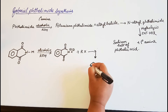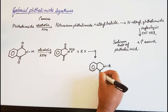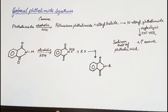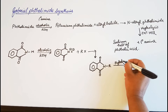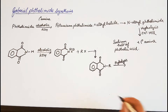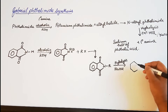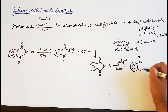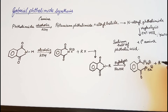The N-alkyl phthalimide has an N-R group and two double-bonded oxygen atoms. This now undergoes hydrolysis, either using NaOH by refluxing, or using 20% HCl. The products are the sodium salt of phthalic acid — written as two O⁻Na⁺ groups — plus R-NH₂, the primary amine.